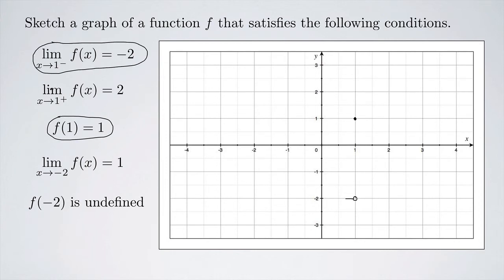Now the next one, the limit as x approaches 1 from the right of f of x is positive 2. So here is 1 on the x-axis, and I'm approaching from the right, so from this direction, and I want it to be positive 2. So I'm going to put an open circle right here and a little bit of a line to indicate that it's coming from the right. All right, that takes care of that condition.